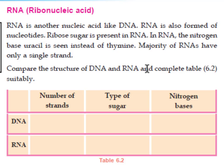Instead of thymine, uracil is seen in RNA. RNA has 4 nitrogen bases, and uracil replaces thymine found in DNA.